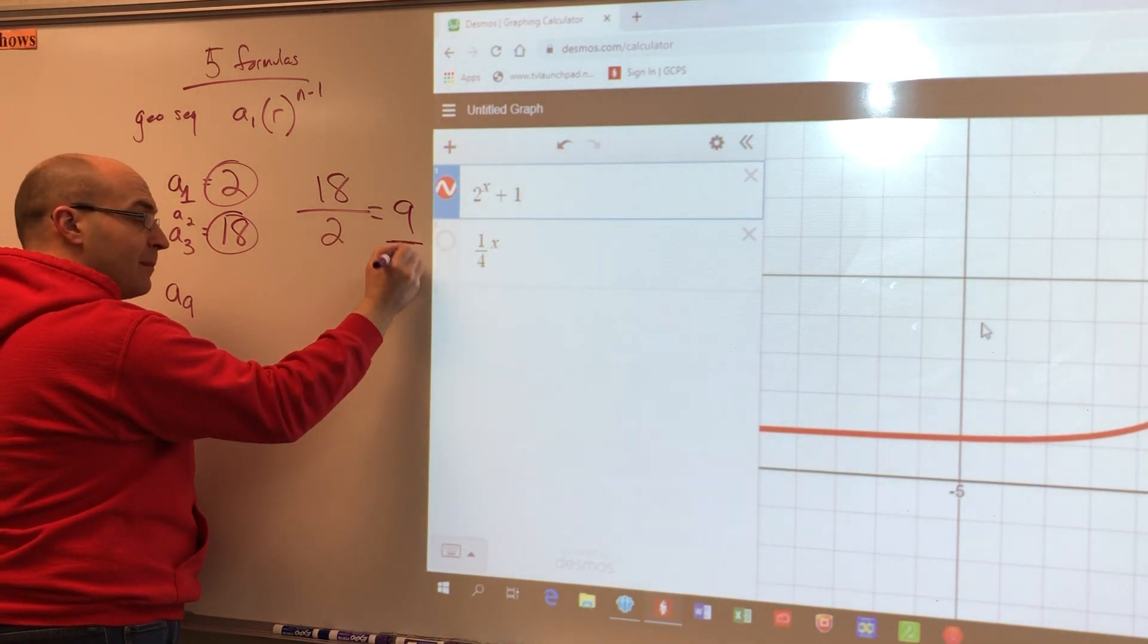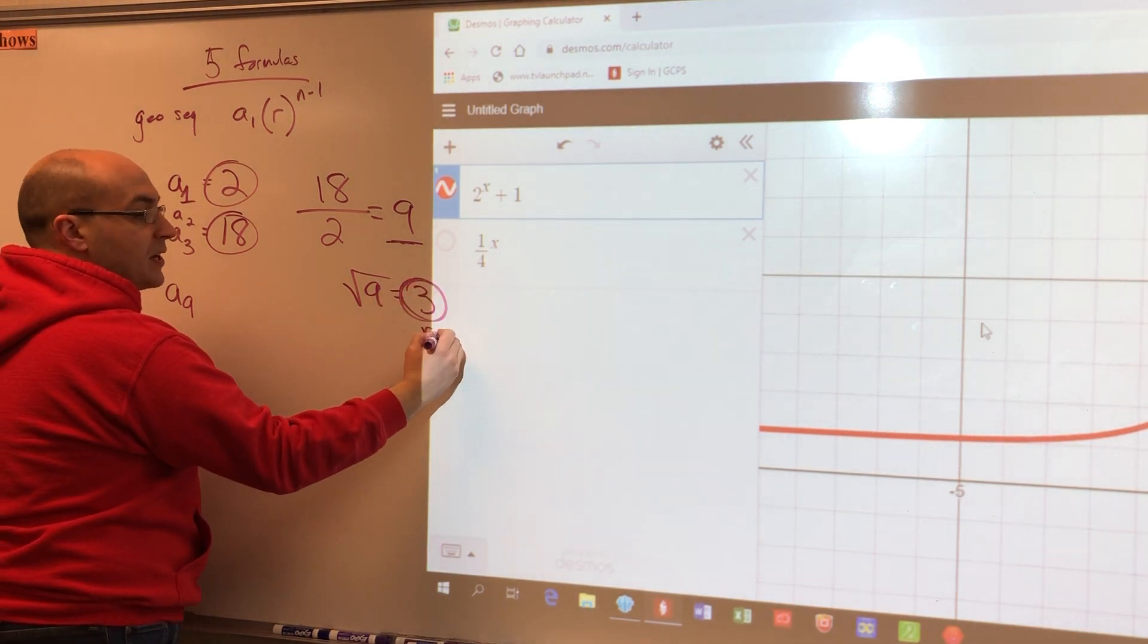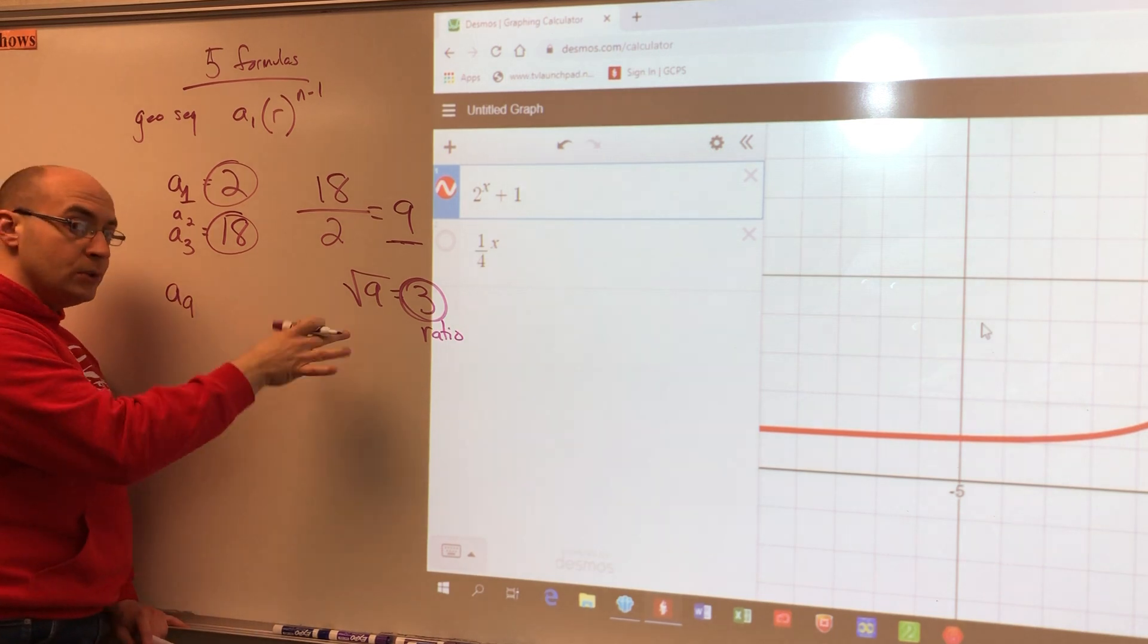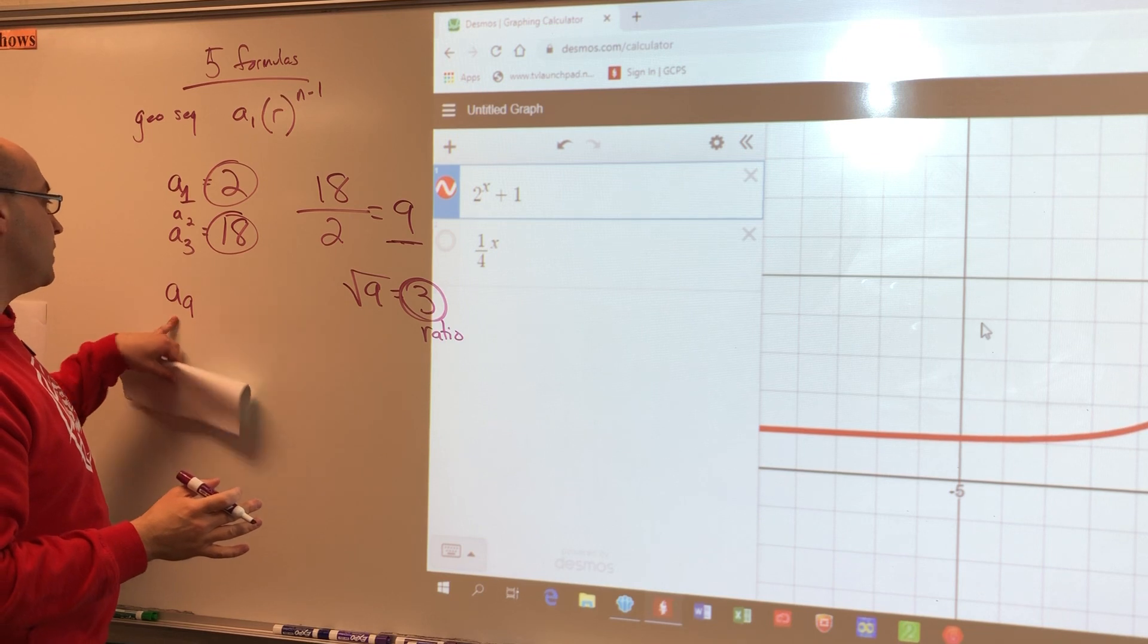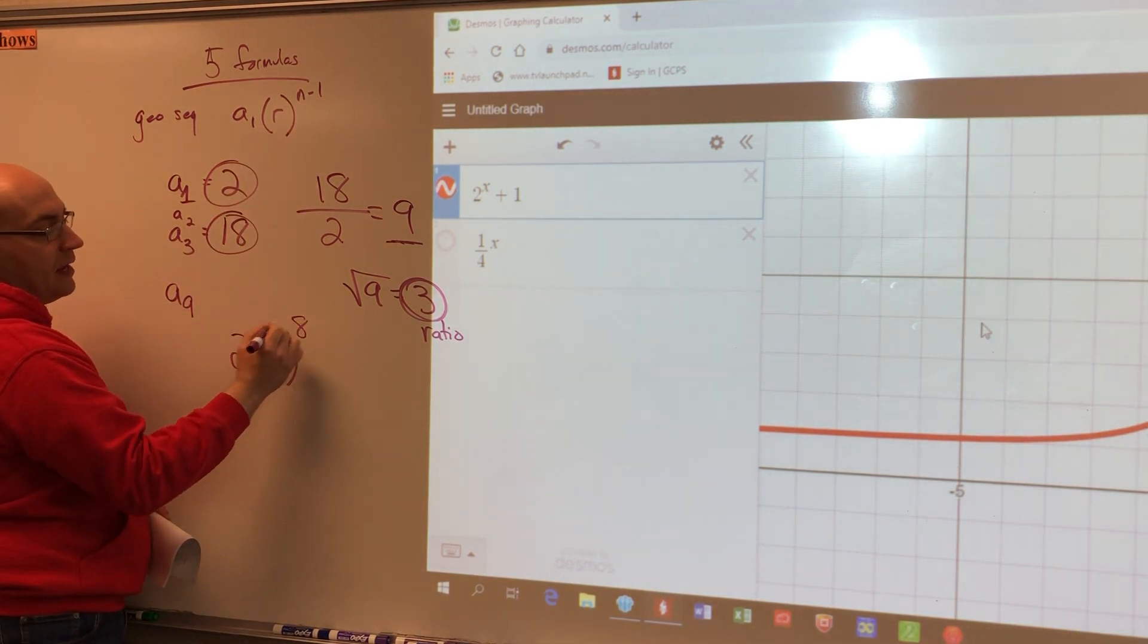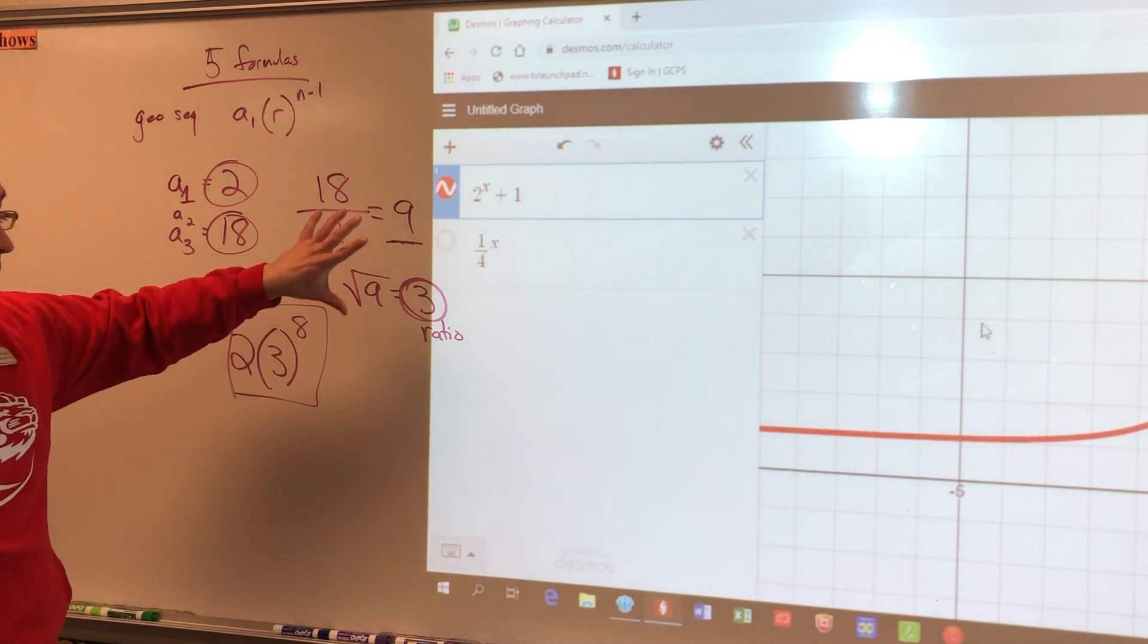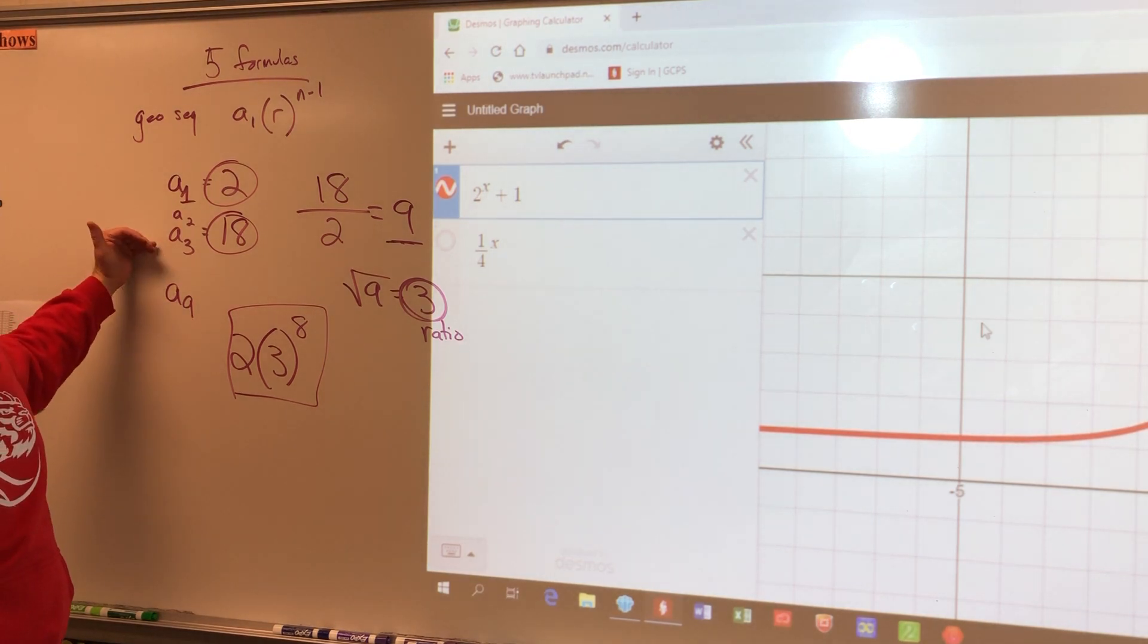Then with that number, we are square rooting that number and we're only getting the positive version. This is the common ratio. Three is the common ratio. Now I can use the common ratio and my terms here to find the ninth term that I'm looking for. So remember the first term is two. Now I know the common ratio is three and I want the ninth term. So I'm just going to raise it to the eighth power in the calculator and you would evaluate that in the calculator to get your answer.